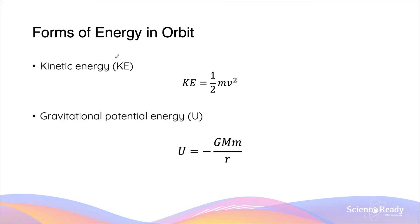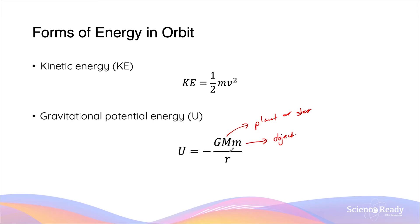By way of review, kinetic energy is determined by the mass of the object and also its velocity: half mv squared. Gravitational potential energy is given by capital M, which is the mass of the planet or the star — the mass around which the object is orbiting — and smaller m is the mass of the actual object itself. And r here is the orbital radius.